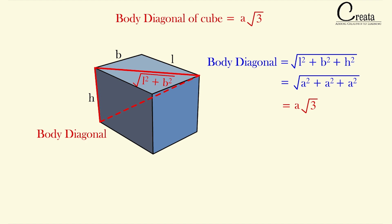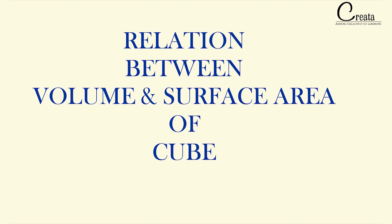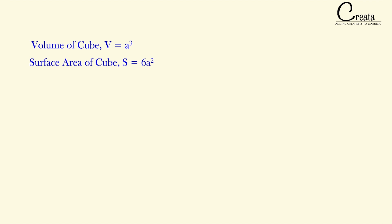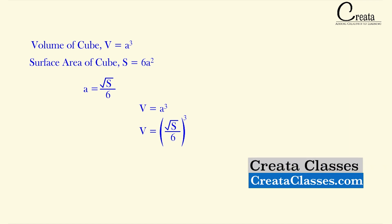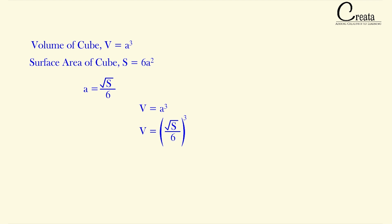One more concept generally asked in competitive exams is the relation between the volume and surface area of a cube. The volume of a cube is A³ and the surface area is 6A². From the surface area, we can write A = √(S/6). Substituting this into the volume formula, we get volume = (√(S/6))³. This gives the relation between the volume and the surface area of the cube.